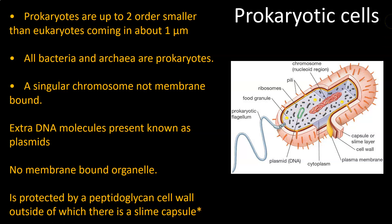When someone has a bacterial infection and the body can't deal with it by itself, they might be administered antibiotics. You may have heard of the phenomenon called antibiotic resistance, where bacteria become resistant to antibiotics. The antibiotic resistance genes are normally expressed in plasmids. One bacterium can pass on its plasmid to another bacterium, making that second bacterium antibiotic resistant — so plasmids can be shuttled from one bacterium to the next.